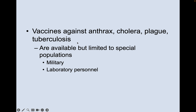We also have vaccines against anthrax, cholera, plague, and tuberculosis. They're available in the U.S. but limited to special populations like the military or laboratory personnel who might be working with these organisms. These are not things the average person is likely to ever encounter unless they're in one of these high-risk groups.